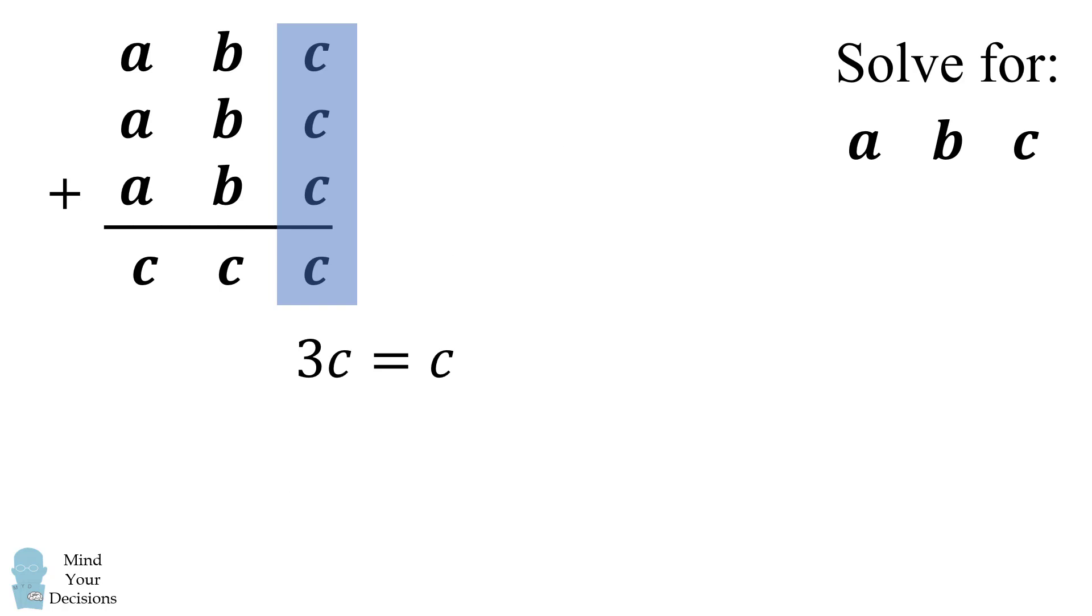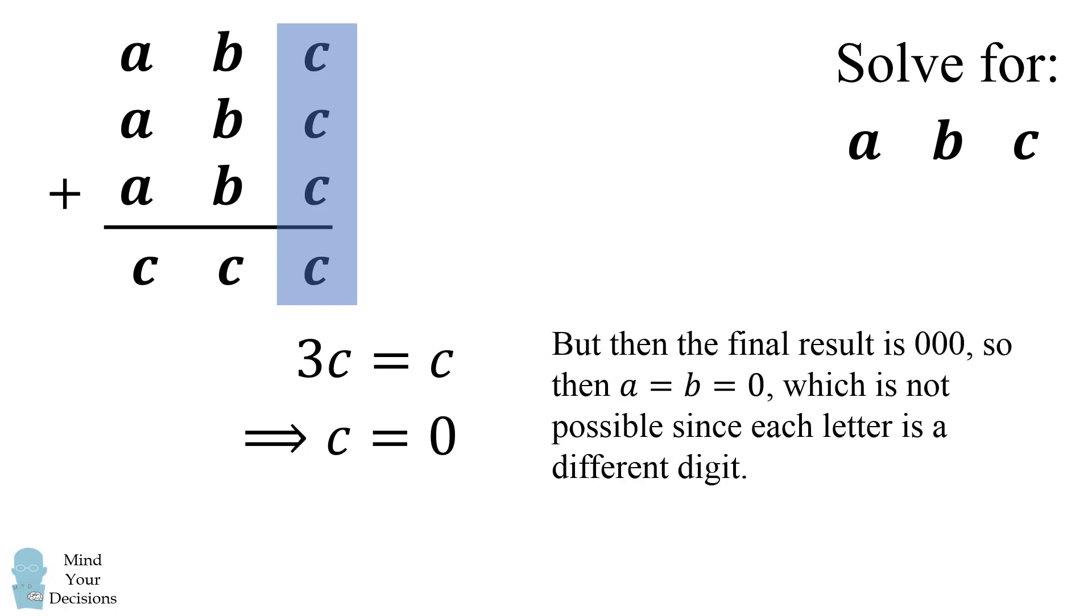If 3c is equal to c that means c is equal to 0. But then the final result is 000 which means a and b would also have to be 0. And this is not possible since each letter represents a different digit. So we cannot have c being equal to 0.